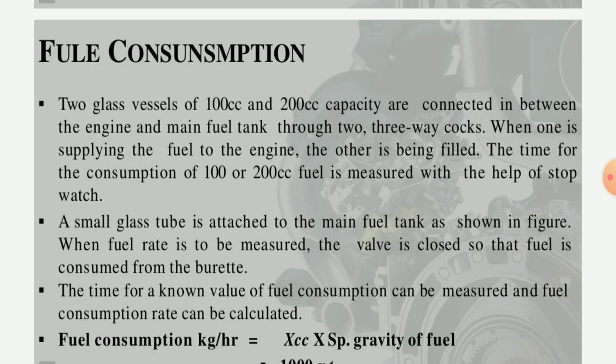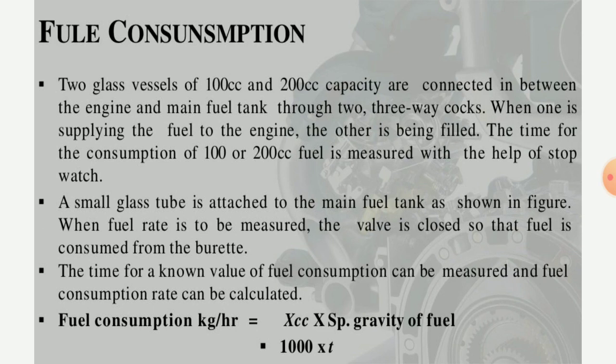The effect of brake power, indicated power, and frictional resistance on fuel consumption of the IC engine: glass vessels of 100 cc and 200 cc capacity are connected between the engine and the main fuel tank through three-way cocks. The time for consumption of 100 to 200 cc of fuel is measured with the help of a stopwatch. A small glass tube is attached to the main fuel tank, and when the fuel is to be measured the valve is closed so that the fuel consumption rate can be calculated.